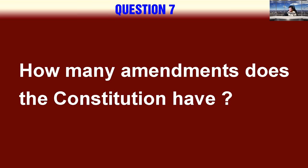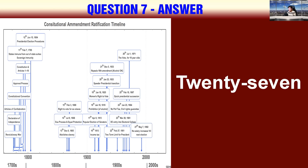How many amendments does the Constitution have? 27.